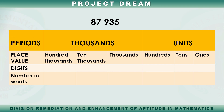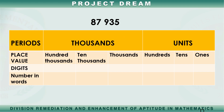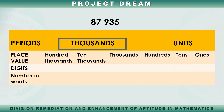We have to remember two periods: namely the units period and the thousands period. Under the units period are ones place, tens place, and hundreds place. While in the thousands period are thousands place, tens thousands place, and hundreds thousands place.